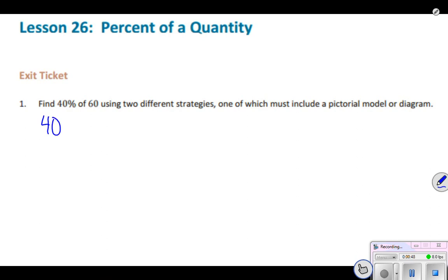40% is equal to 40 out of 100. So 40% of 60... if I want to figure out what 40% of 60 is, I might want to make an equivalent fraction. I know that 40 out of 100 is equivalent to 4 tenths. Now I have a number that is compatible with 60.